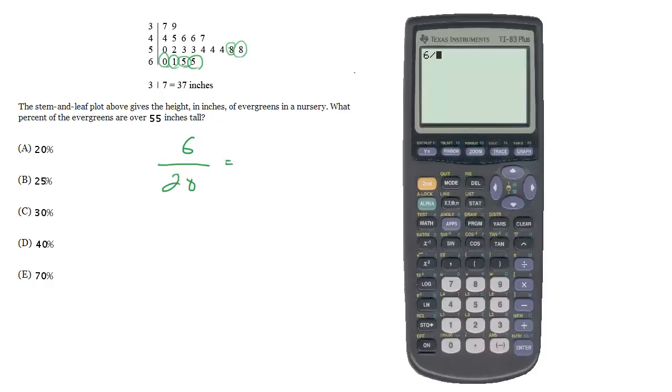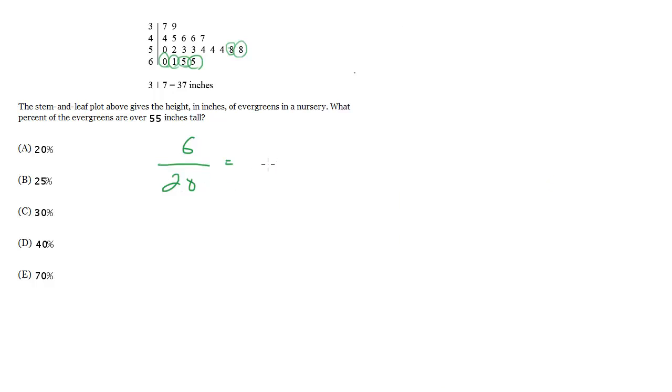So let's go ahead, put that in my calculator, get 0.3, which is the same thing as 30%. And that is choice C.